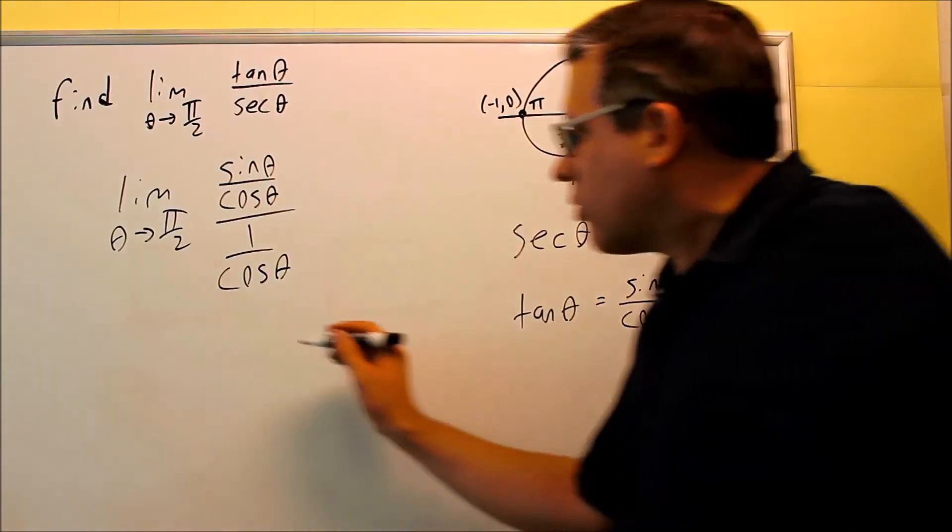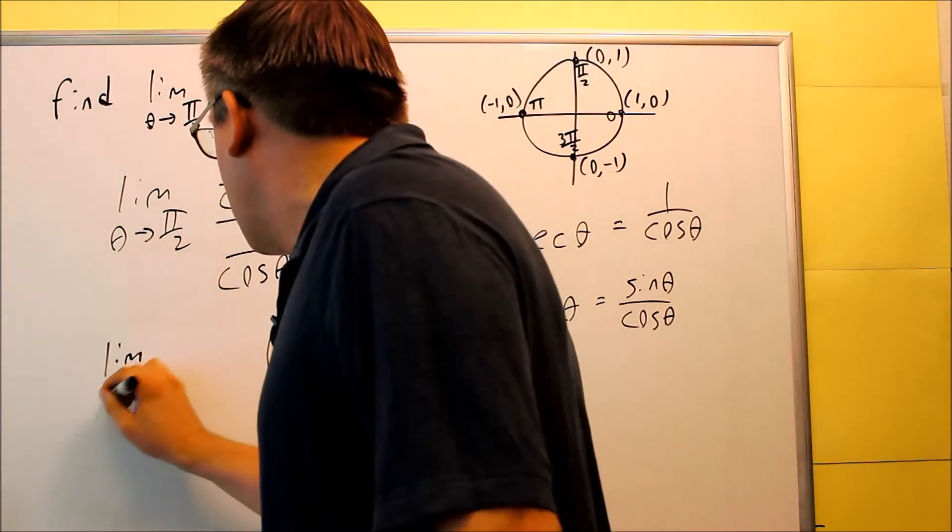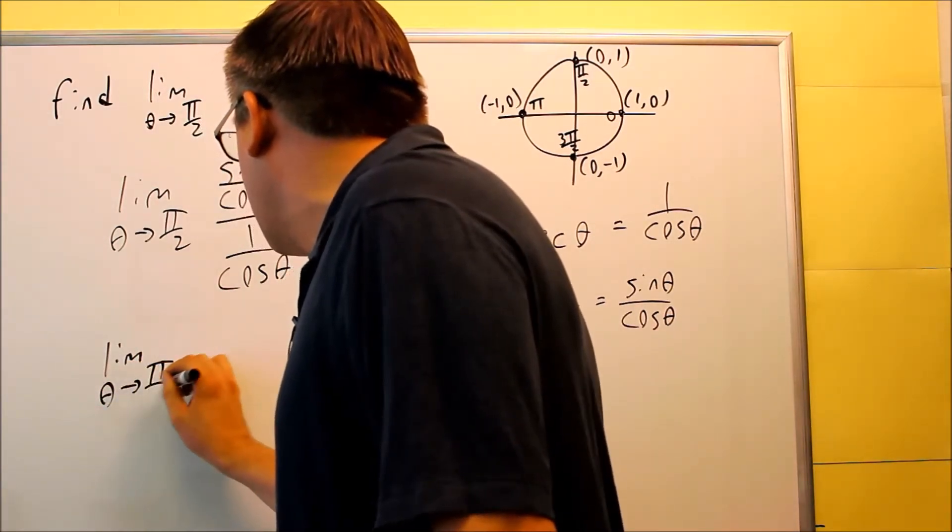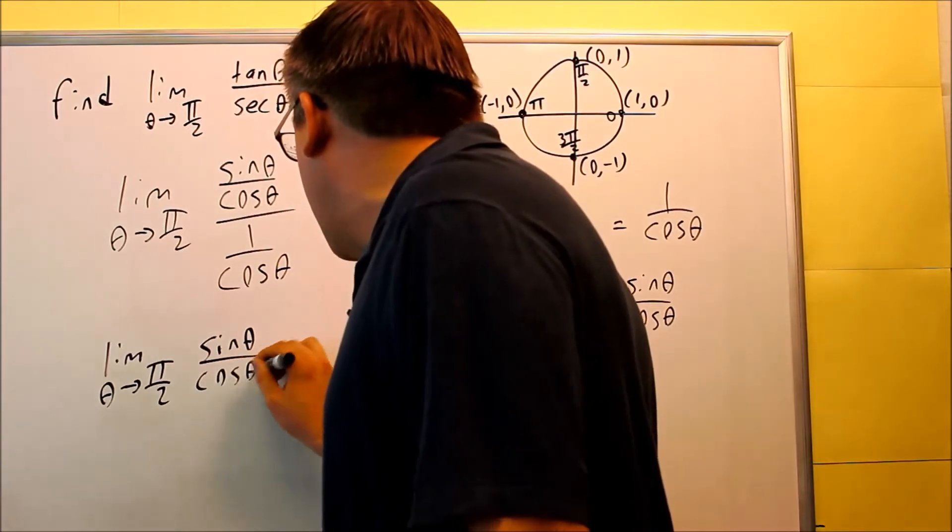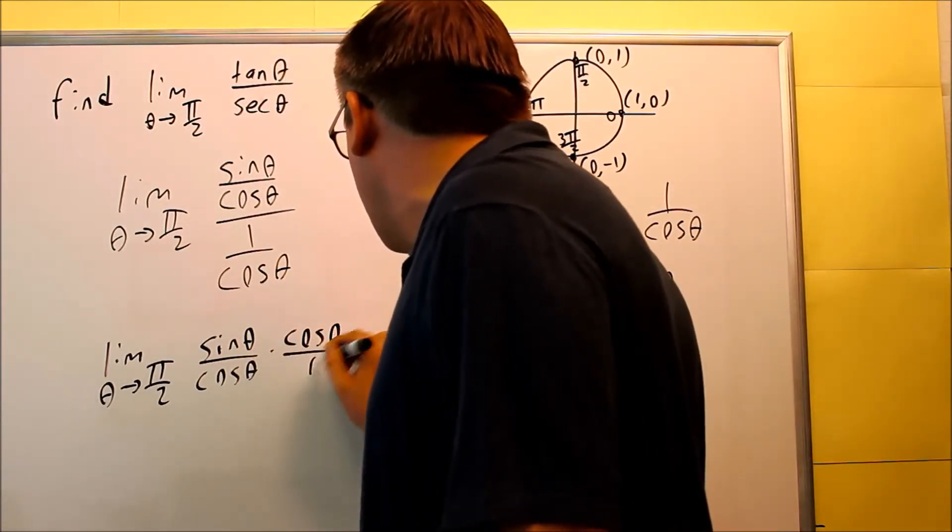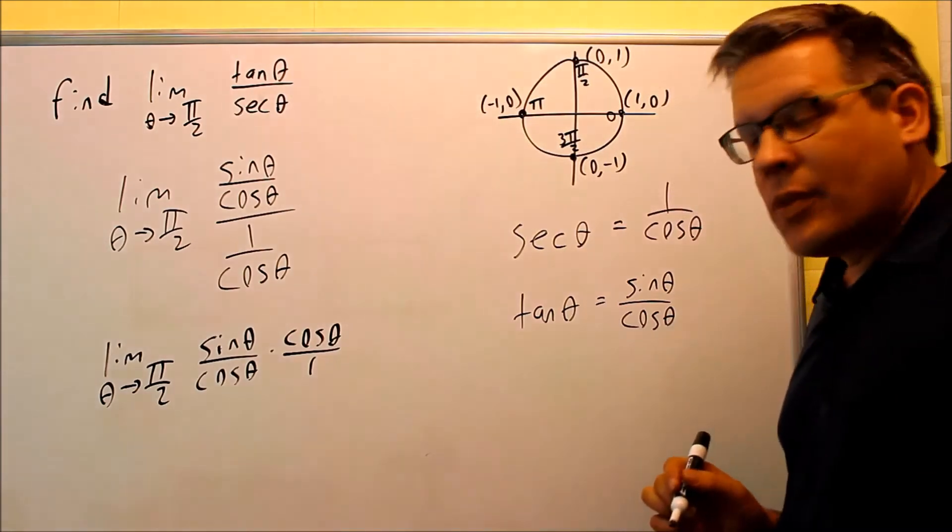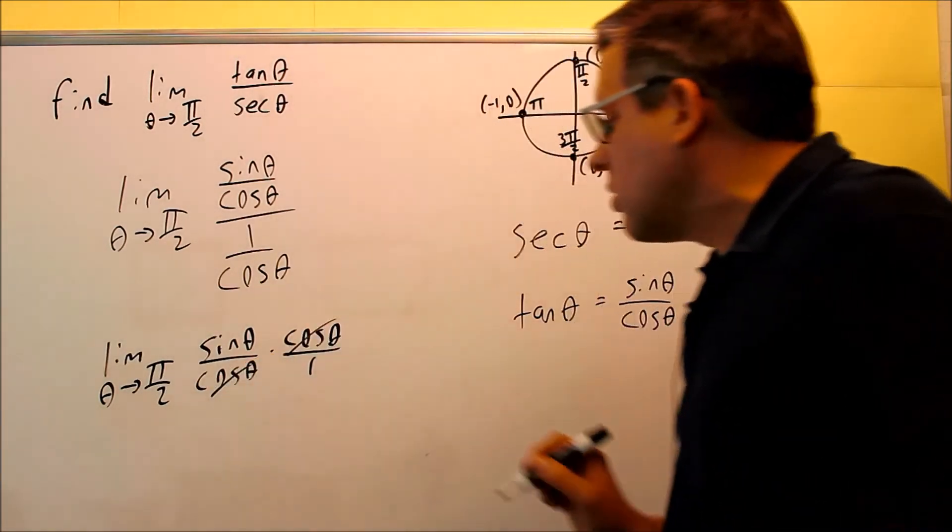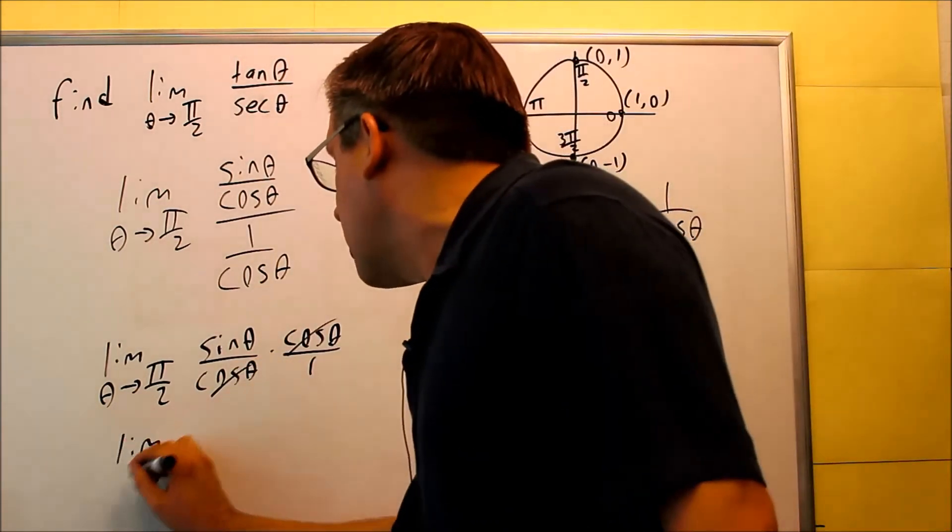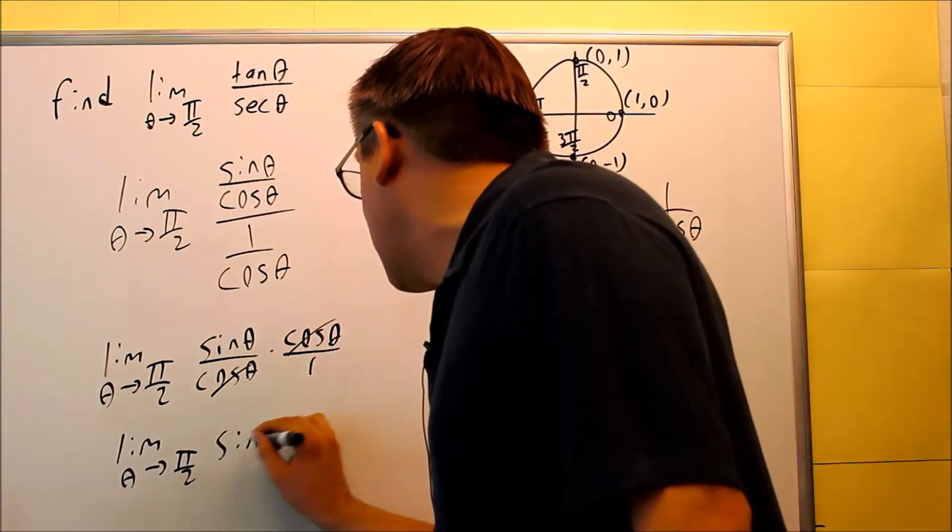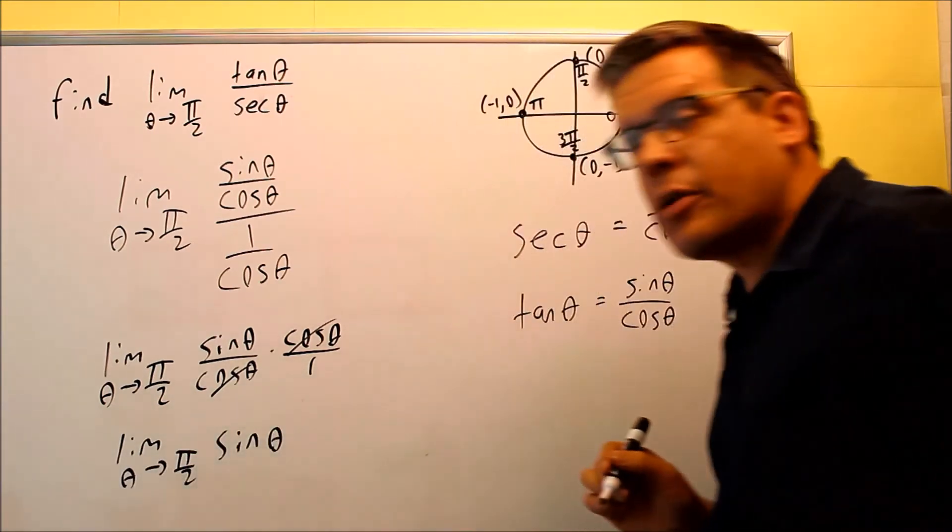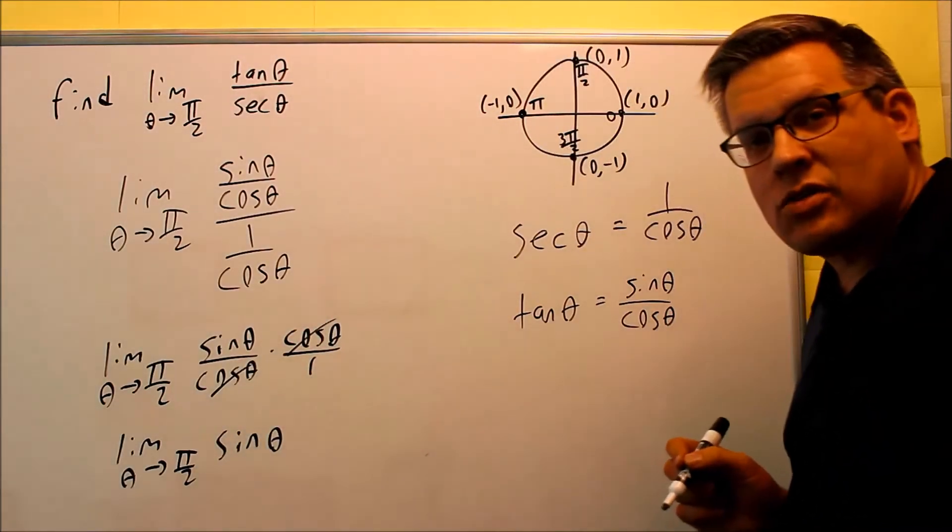When I flip that around, I get limit as θ approaches π/2. I have the top fraction. We're going to multiply it by the reciprocal of the bottom fraction. So we're going to do cosine over 1. The cosines are going to cancel out. And that gives me limit as θ approaches π/2 of sine θ. So now I no longer have to worry about dividing by 0 because I got the cosines to cancel.